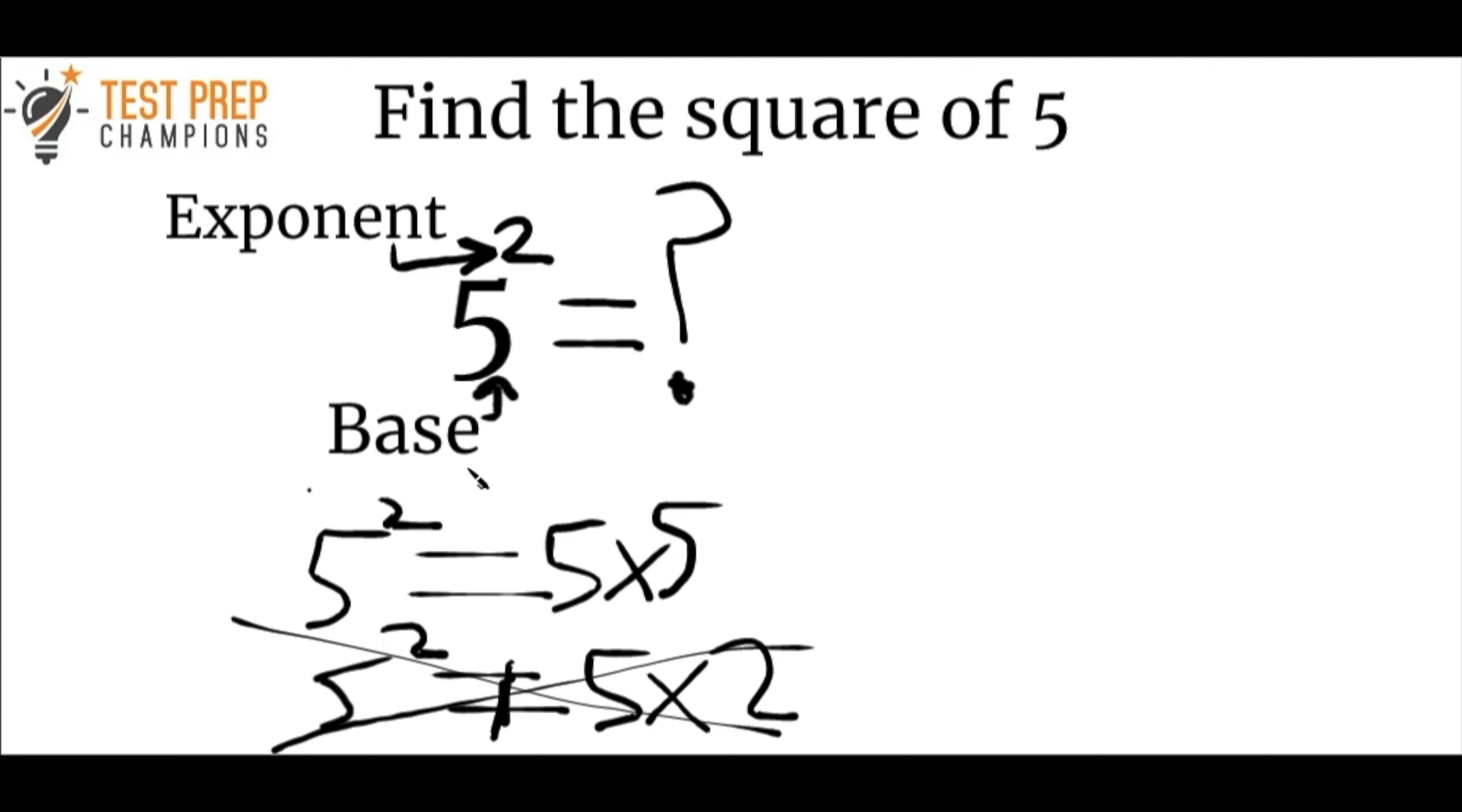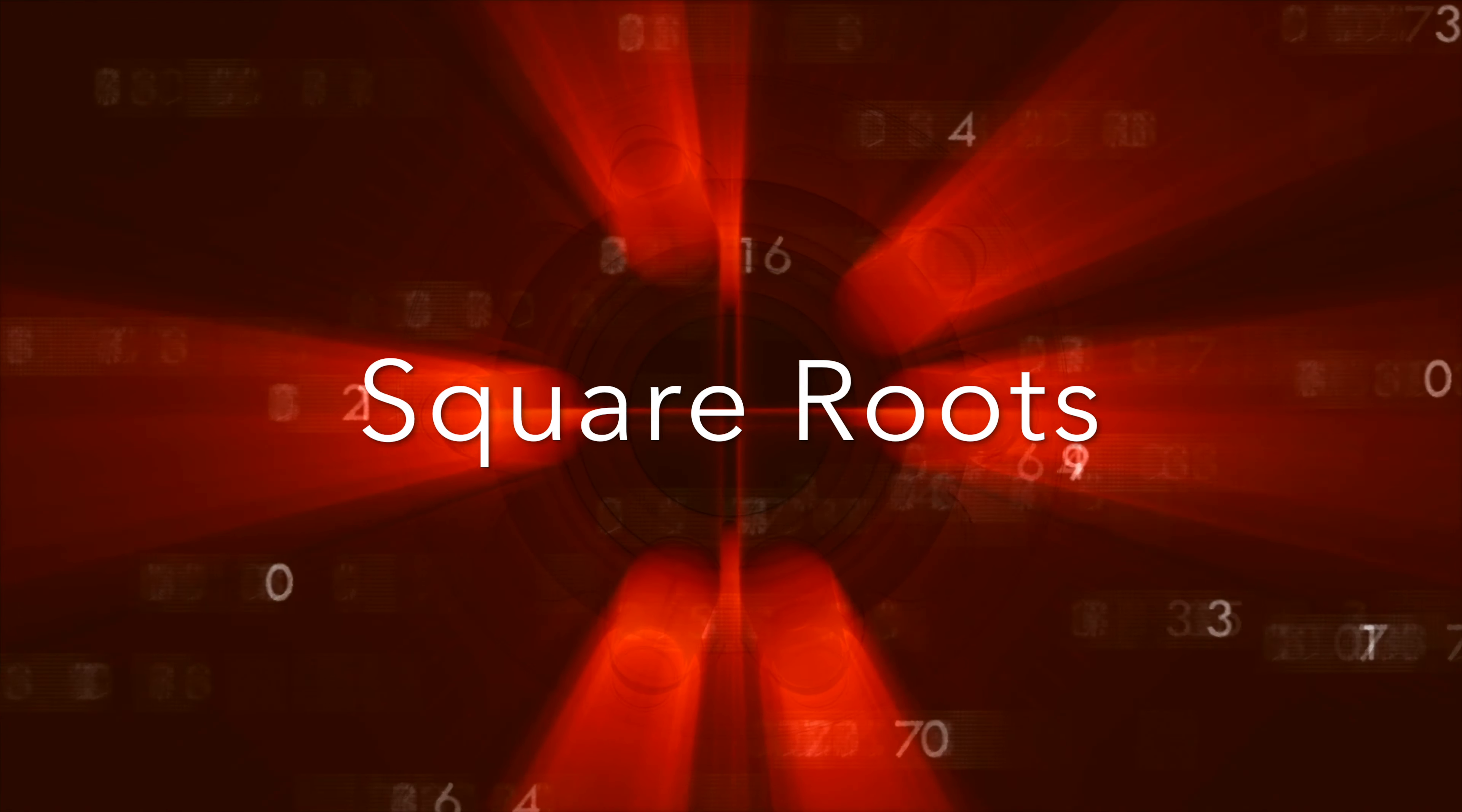So understand that 5 raised to the second power means that you multiply 5 by itself so that way you end up with two 5's in your work here. And 5 times 5 is going to equal 25 and that is the correct answer here. So that's how we do squares.